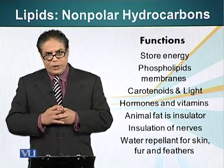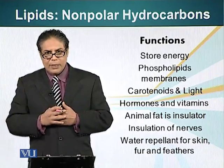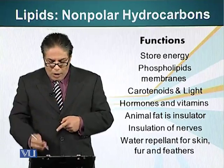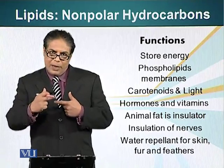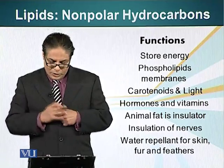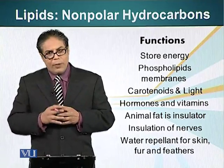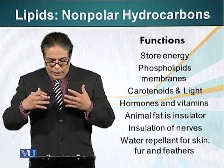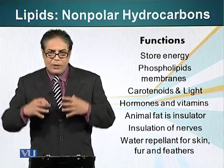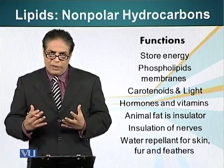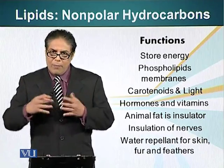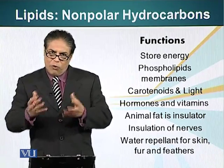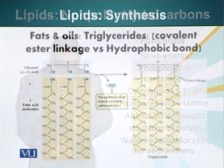Nerve cells also need insulation, just like our electric cables. Electric cables are insulated by rubber; however, our nerves are insulated by a type of lipid molecule, so they are electrically isolated. Also, many animals that live in an aquatic environment can coat their external surface — their feathers, for example — with lipid molecules, so the lipid molecules serve as a water repellent in such cases.